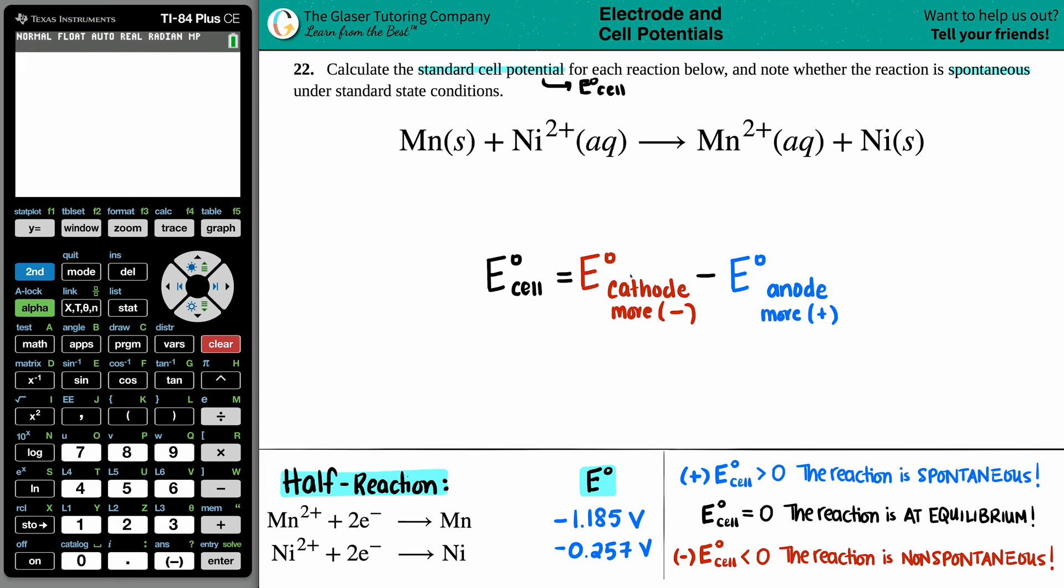Now remember, cathode is always undergoing reduction and that's when your charges are always going to become more negative. On the flip side, oxidation happens at the anode and that's when your charges, your oxidation states are becoming more positive.